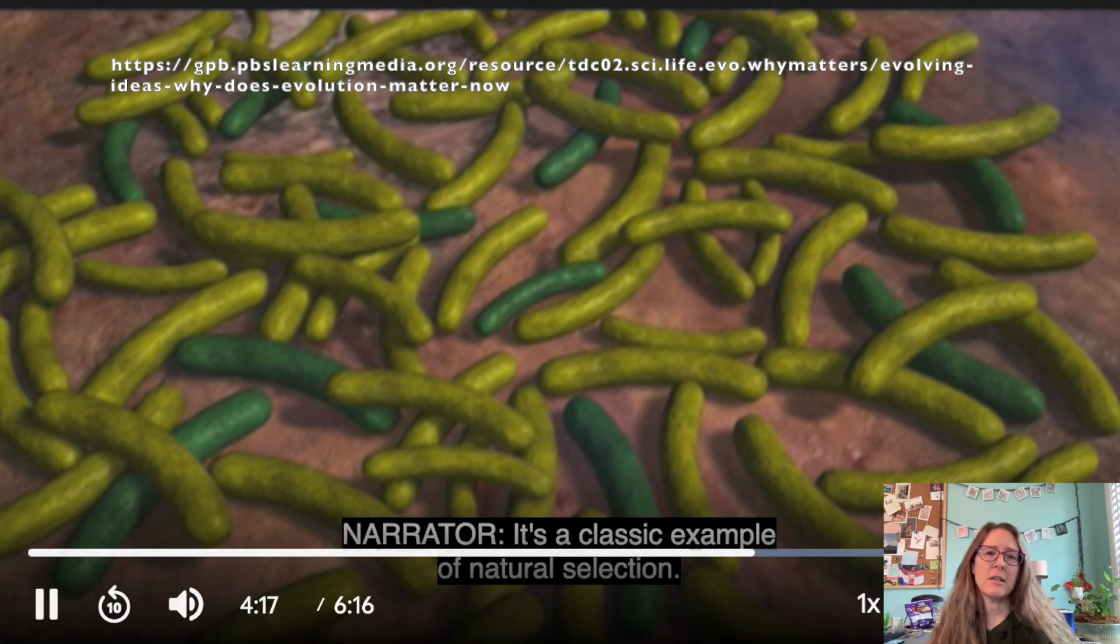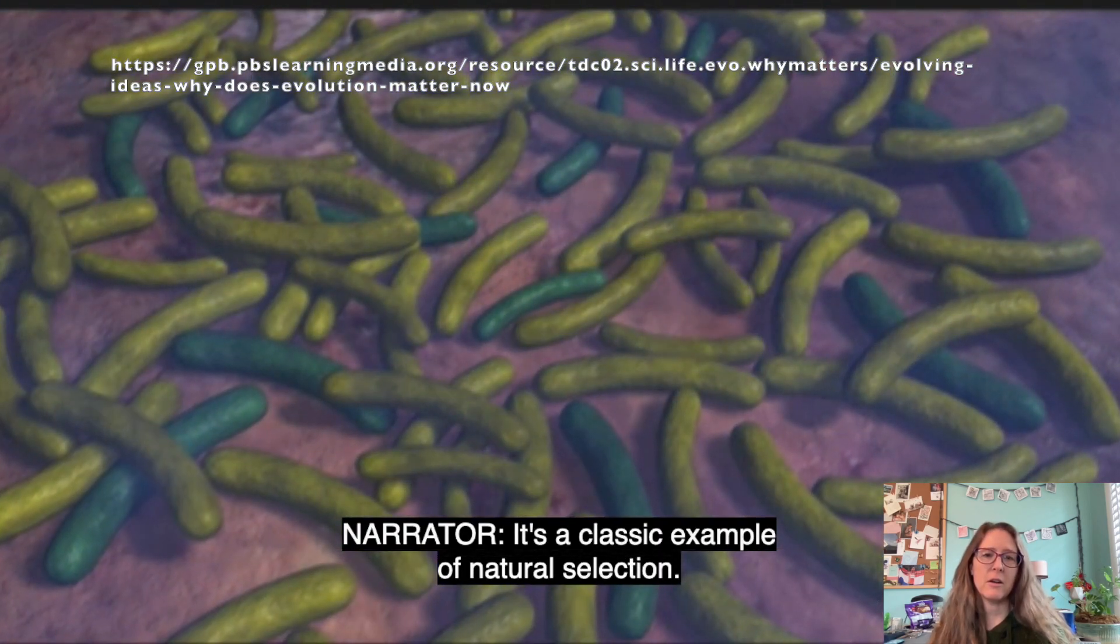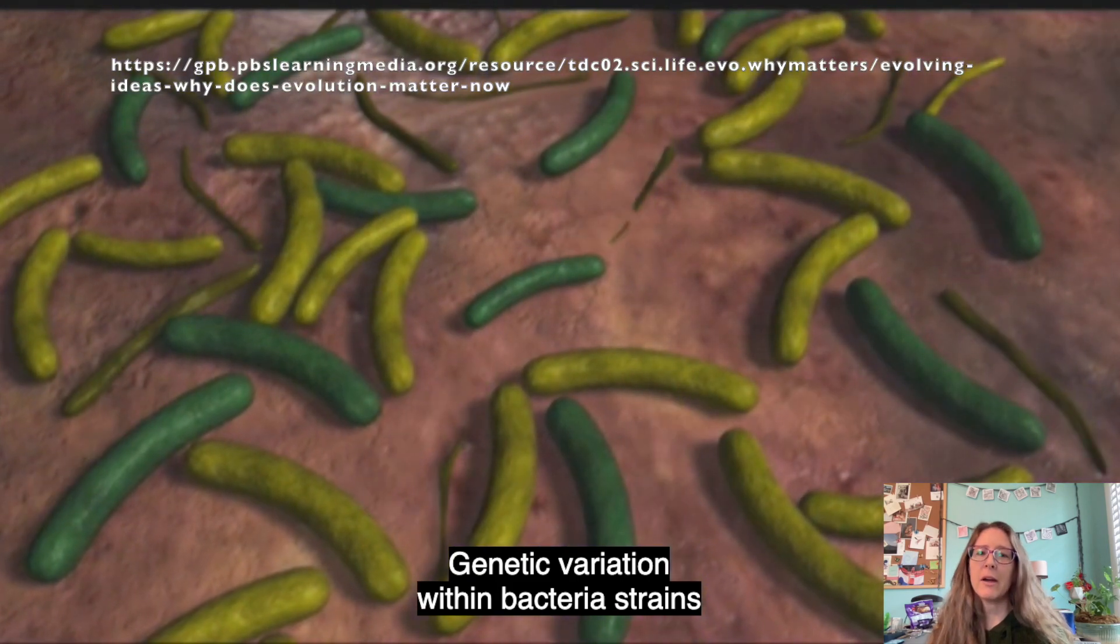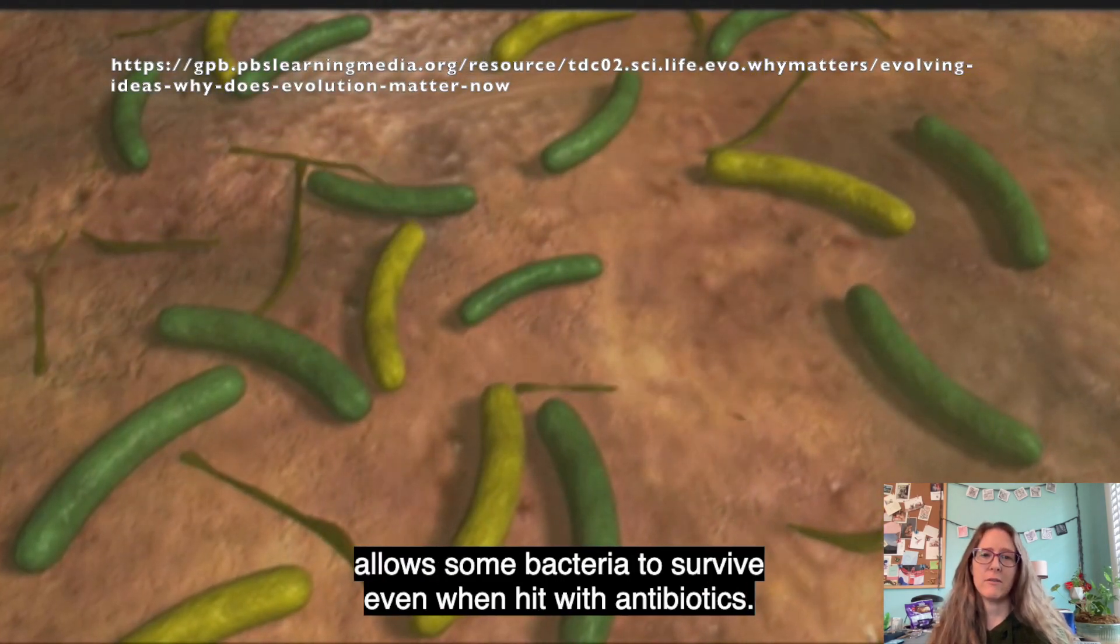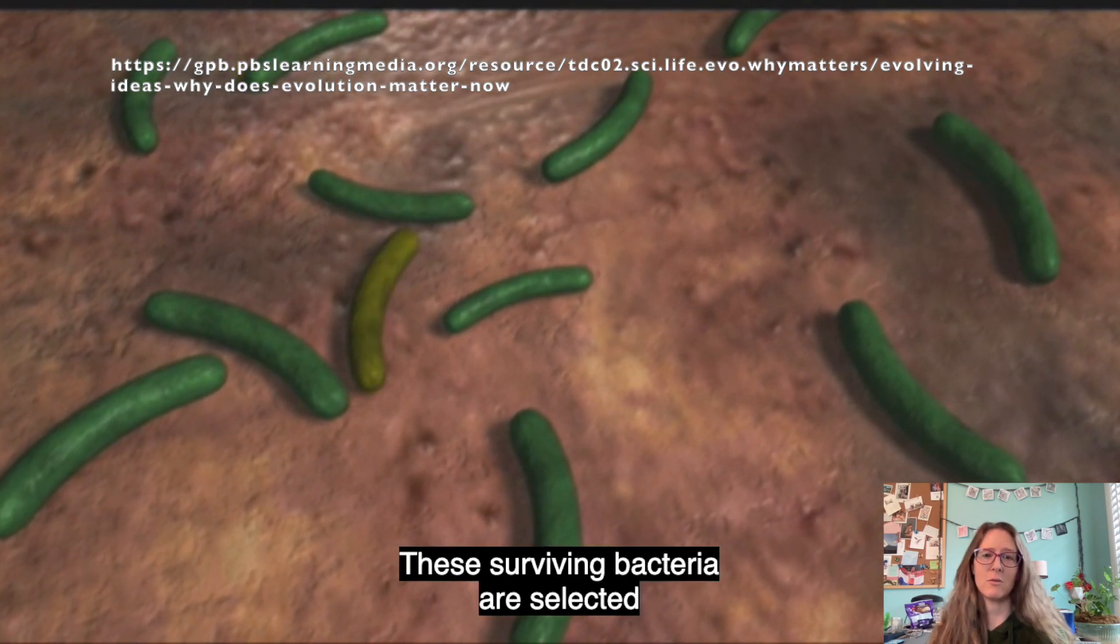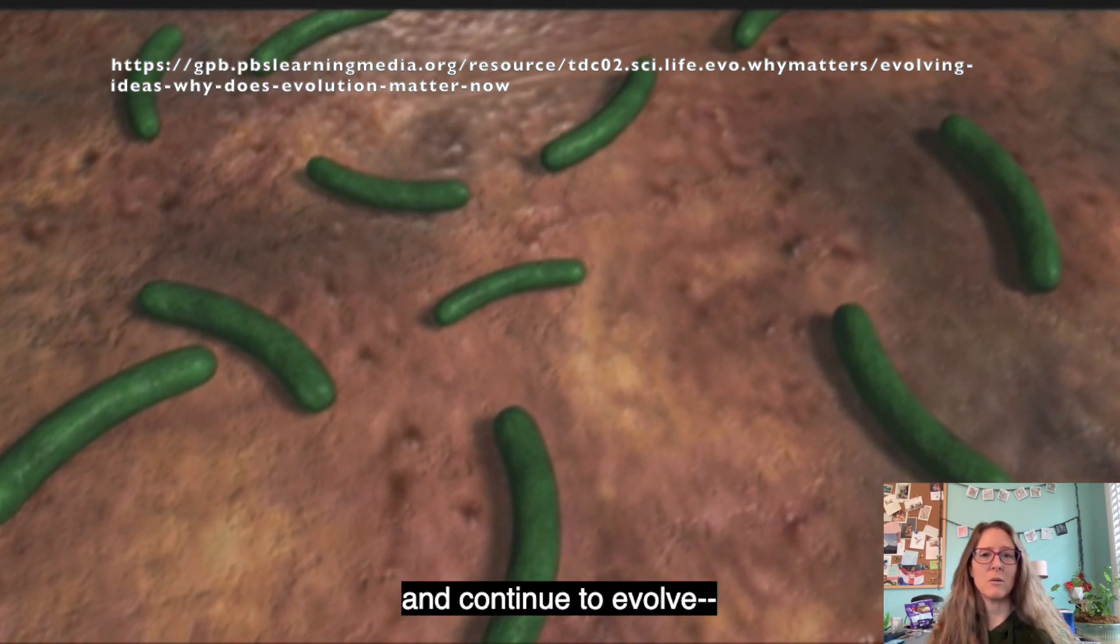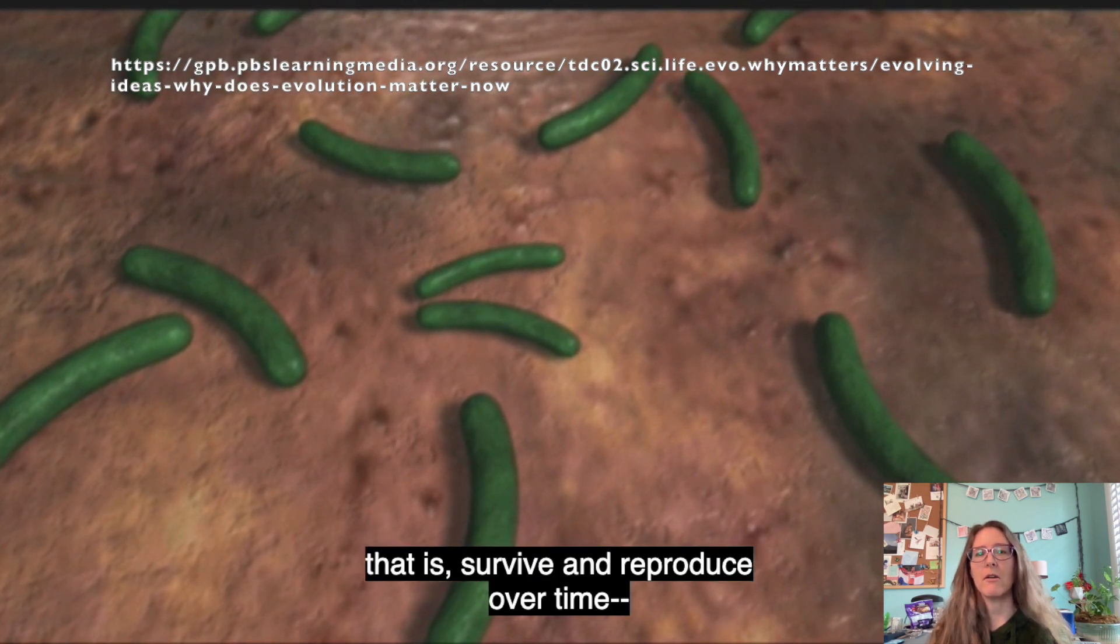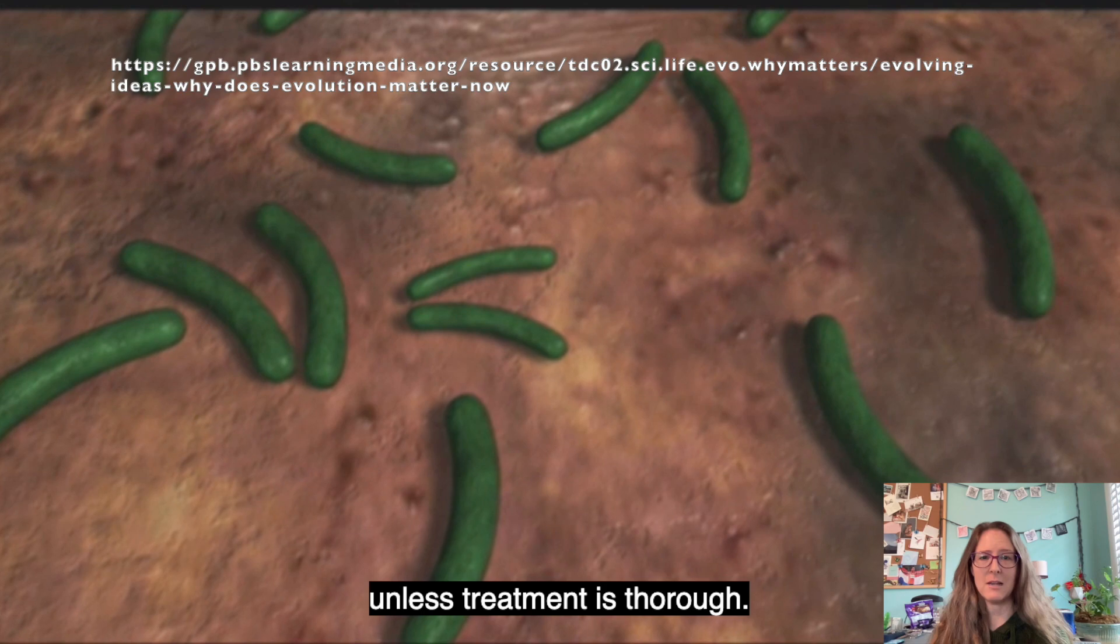Each bacterial population contains natural variation in their resistance to whatever antibiotics we're taking. Antibiotics kill off the least resistant individuals of the bacteria first, and the most resistant individuals last. That's why it's so important to take a full course of antibiotics, so that we make sure to kill off the most resistant bacteria in the end.